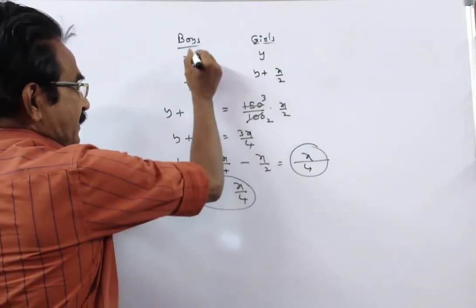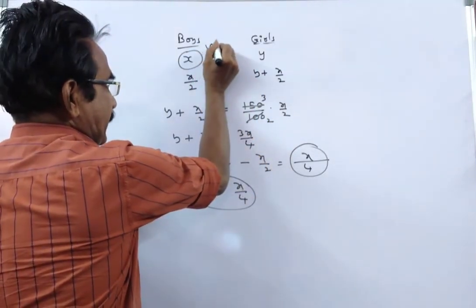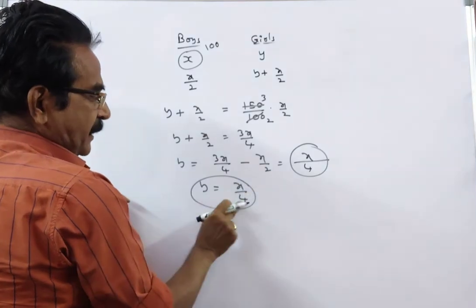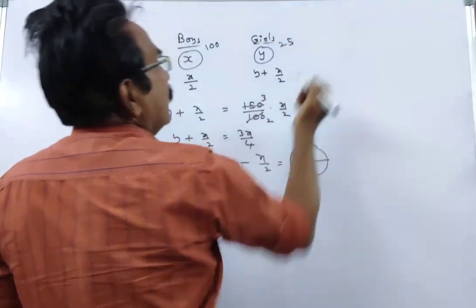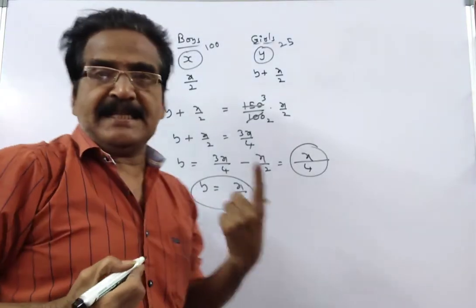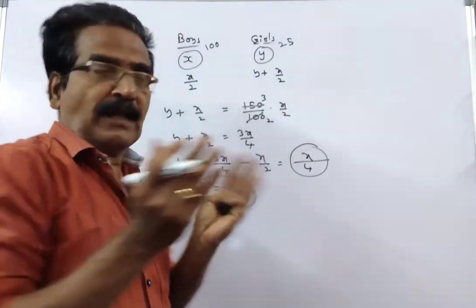Say X is 100. Then Y becomes 100 by 4, which is 25. Then the question is, girls is what percent of overall class?